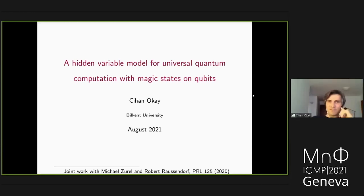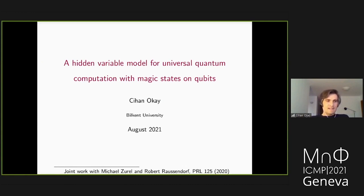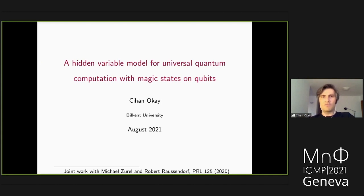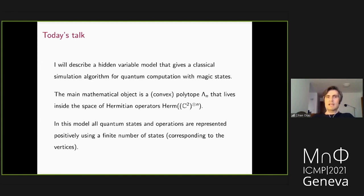Thank you to the organizers for this opportunity. I'll tell you about a hidden variable model — a specific construction giving rise to a classical simulation algorithm for quantum computation with magic states, focusing on qubits. The main mathematical object turns out to be a convex polytope: a bounded object inside the space of Hermitian matrices with a finite number of vertices.